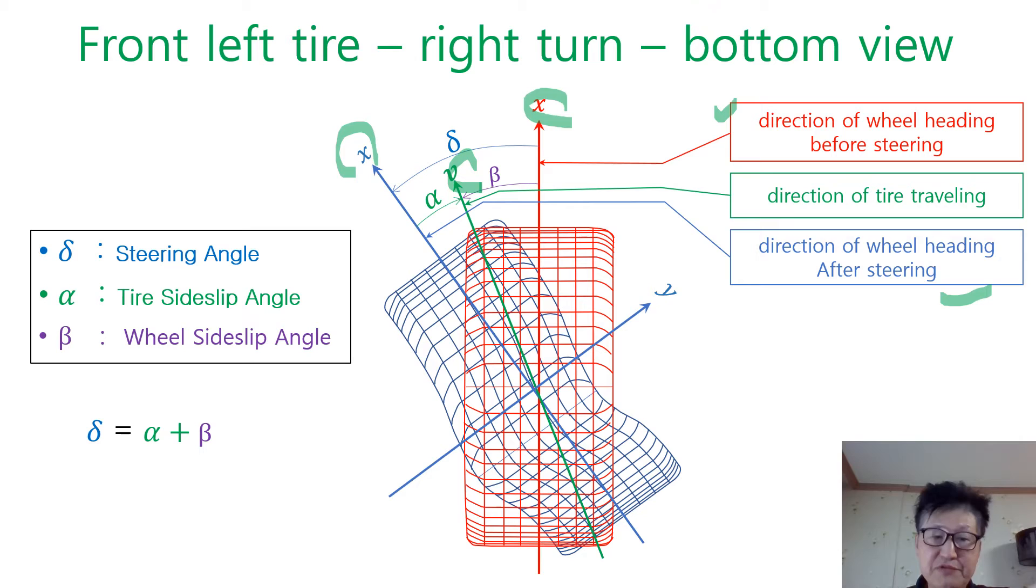The blue X axis stands for direction of wheel heading after steering. The green X is V stands for direction of tire traveling. In this picture, delta is the steering angle. Beta is wheel side slip angle.